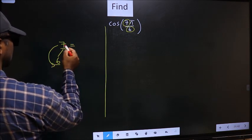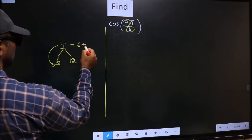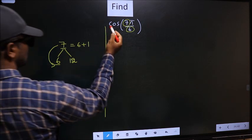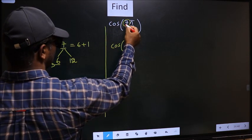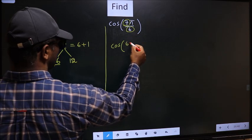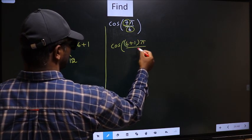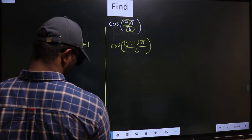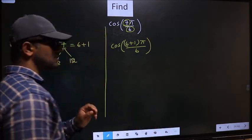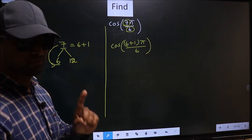So now 7 should be written as 6 plus 1. So this will change to cos, in place of 7, now you write 6 plus 1, π by 6. This is your step 1.